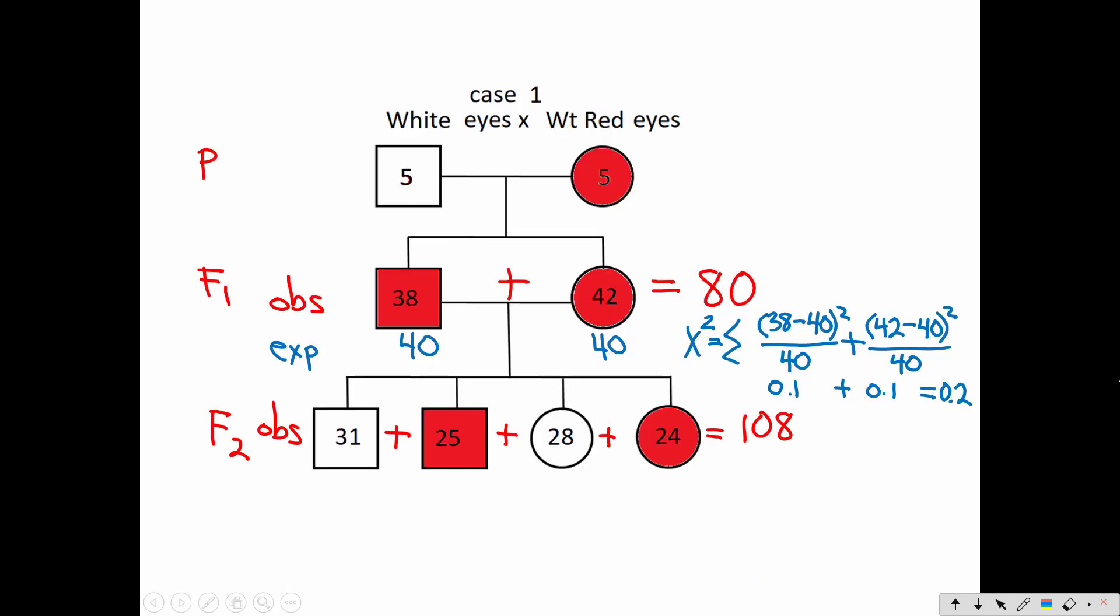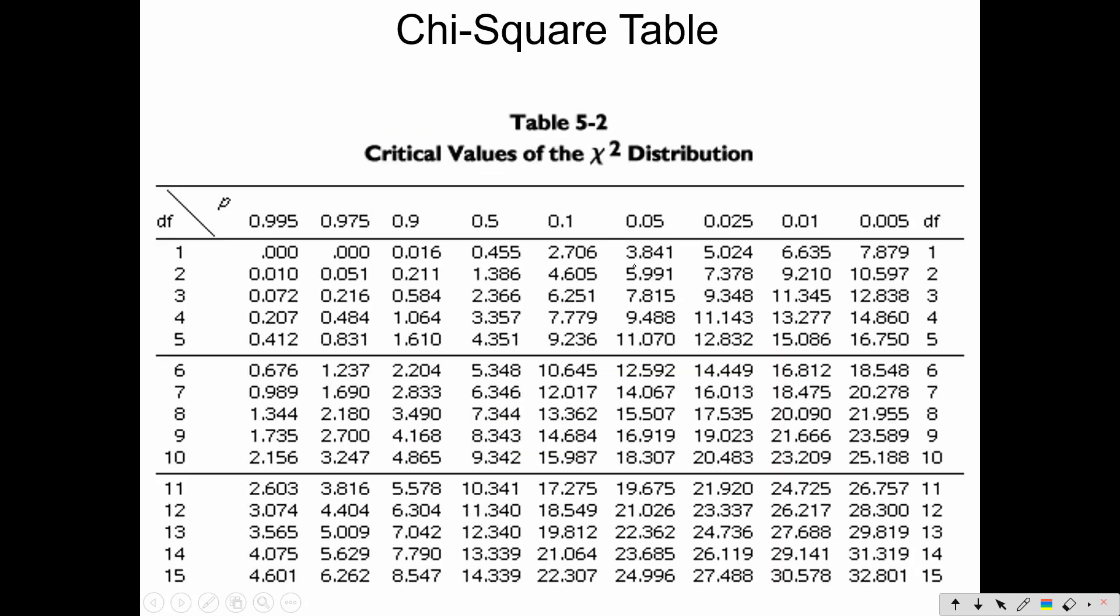And our calculation here of 0.2 for our chi-square number is way smaller than 3.841. So I would fail to reject my hypothesis that red eyes is autosomal dominant, white eyes is autosomal recessive.